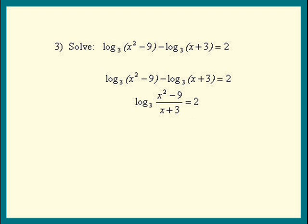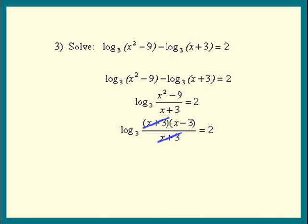X squared minus 9 factors into x plus 3 times x minus 3, and we see an x plus 3 on the bottom, so the x plus 3's cancel. That leaves us with a much simpler equation: log base 3 of x minus 3 equals 2. We can raise both sides to the base 3 or use the log definition — either method gives us x minus 3 equals 3 squared, which is 9. So the answer is x equals 12.